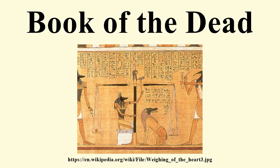Once pacified, the supernatural creatures posed no further threat and could even extend their protection to the dead person. Another breed of supernatural creatures was slaughterers who killed the unrighteous on behalf of Osiris; the Book of the Dead equipped its owner to escape their attentions. As well as these supernatural entities, there were also threats from natural or supernatural animals, including crocodiles, snakes, and beetles. If all the obstacles of the Duat could be negotiated, the deceased would be judged in the weighing of the heart ritual. Depicted in Spell 125, the deceased was led by the god Anubis into the presence of Osiris, where the dead person swore that he had not committed any sin from a list of 42 sins, reciting a text known as the Negative Confession. Then the dead person's heart was weighed on a pair of scales against the goddess Maat, who embodied truth and justice, often represented by an ostrich feather, the hieroglyphic sign for her name.